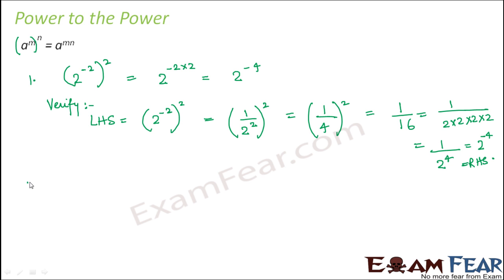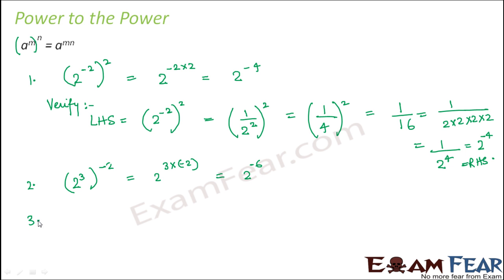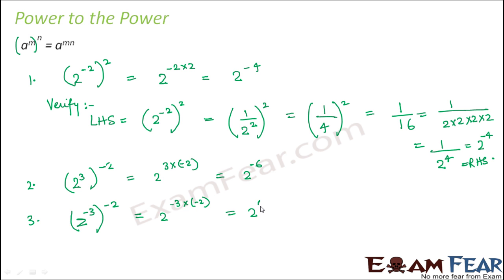A few more examples: 2 to the power 3 whole to the power minus 2 equals 2 to the power 3 into minus 2, that is 2 to the power minus 6. If both powers are negative, like 2 to the power minus 3 whole to the power minus 2, this becomes 2 to the power minus 3 into minus 2, which is 2 to the power 6. In general, a to the power m whole to the power n equals a to the power mn.